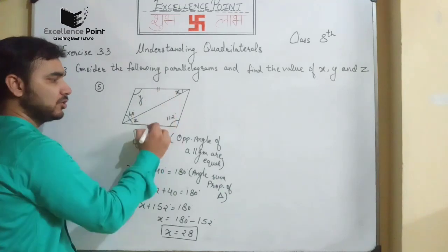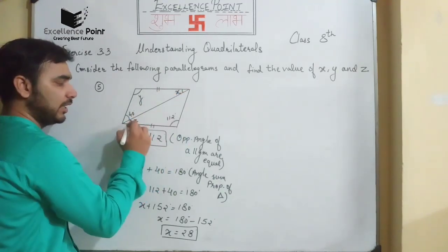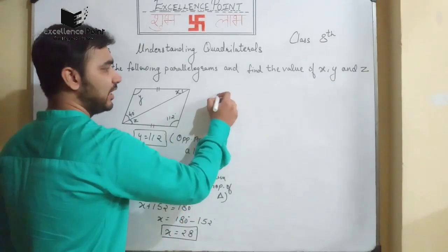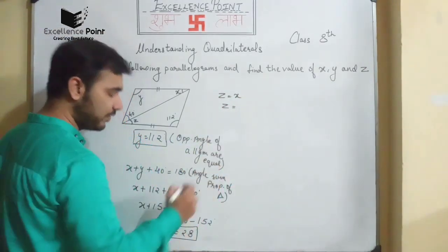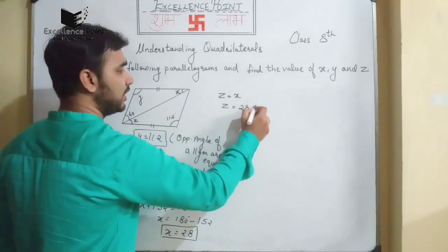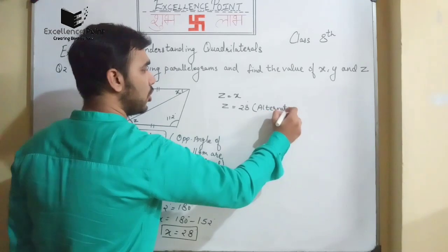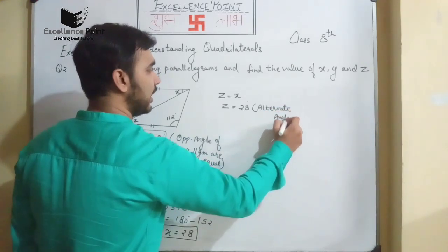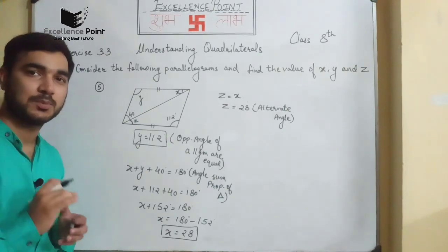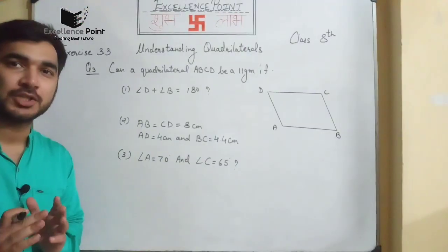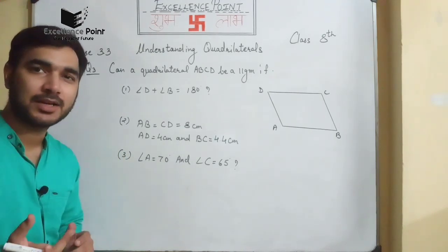These two lines are parallel, so X is the alternate angle to Z. Therefore Z is equal to X, which is 28 degrees — alternate angles. We have finished with question number two. Now in question number three we have given one quadrilateral which may or may not be a parallelogram.